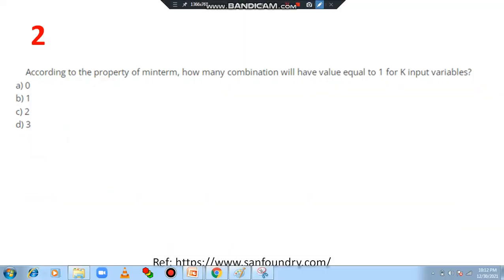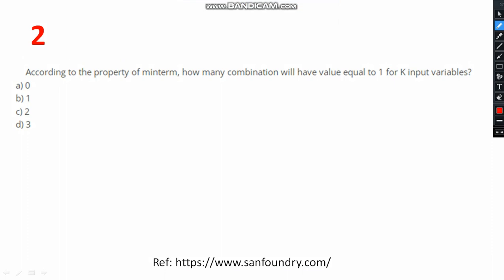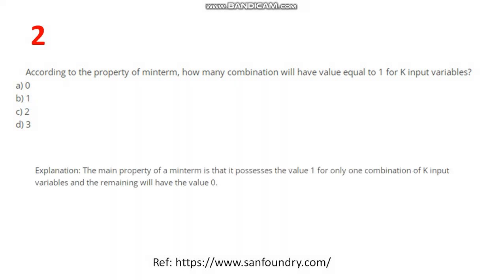Next question. According to the property of min term, how many combinations will have value equal to 1 for k input variables? Of course, it is 1 only. You can select option B. The main property of min term is that it possesses the value of 1 for only one combination of k input variables and remaining will have the value 0.